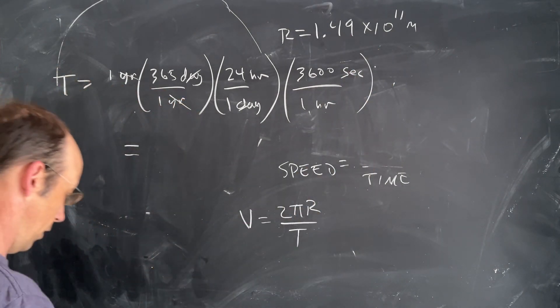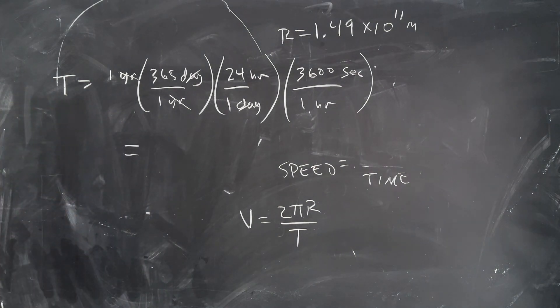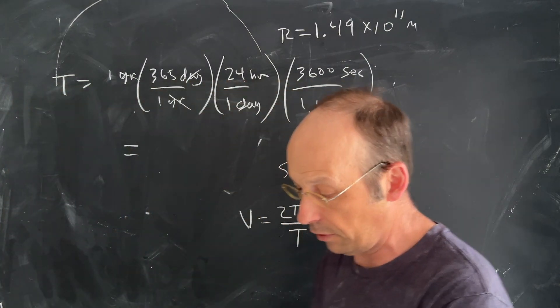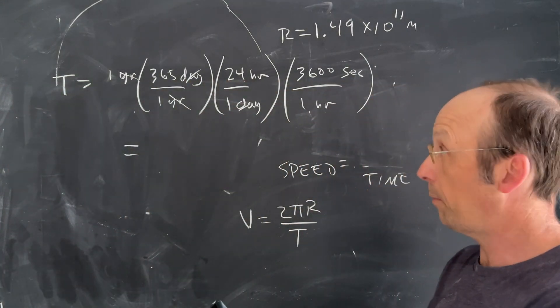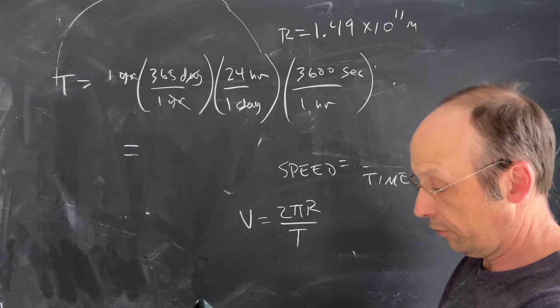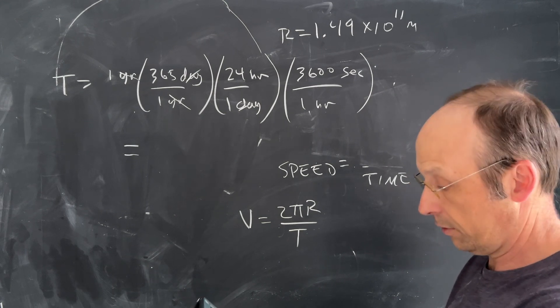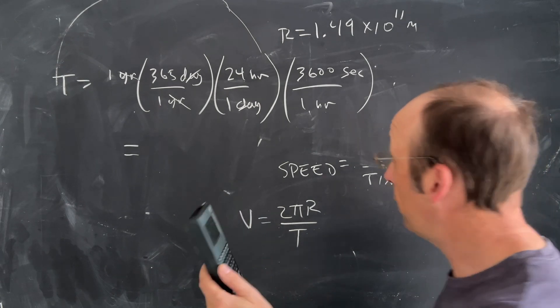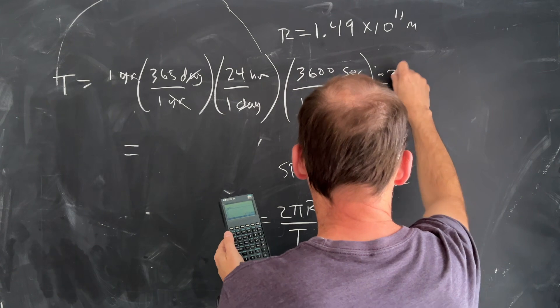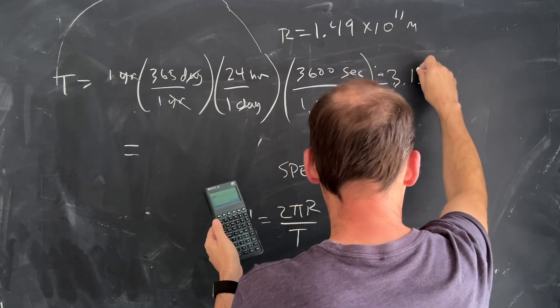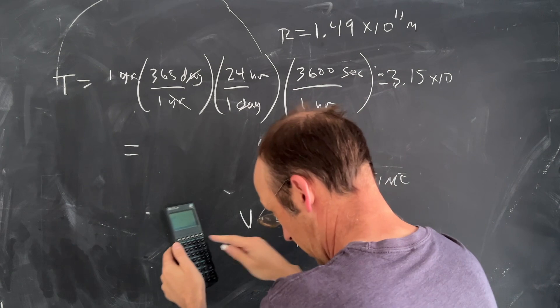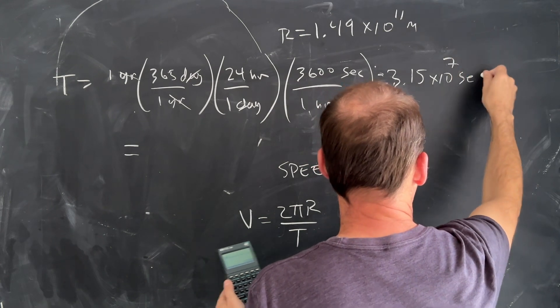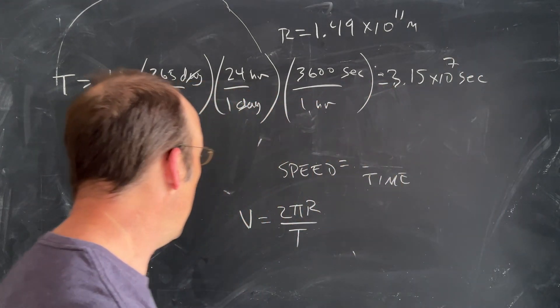Let's calculate that with our calculator—good practice for how many seconds in a year, good for trivia questions. So 365 × 24 × 3600, and I get 3.15 × 10^7 seconds.